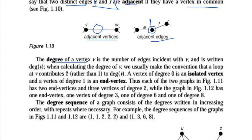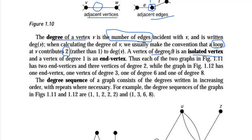We discussed how to calculate the degree of a vertex. The degree of a vertex is the number of edges for that particular vertex. If there is a loop, you have to count it as two. So if a vertex has a loop, we add plus two. A vertex of degree zero is called an isolated vertex — isolated means far, with no connections.